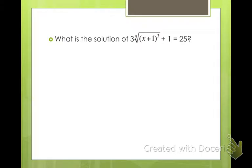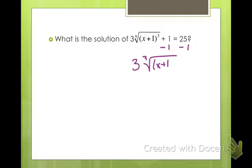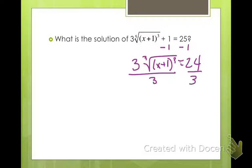What is the solution of 3 times the fifth root of x plus 1 cubed plus 1 equals 25? I know this one looks scary, but just break it down by parts. The first thing we want to do is get the radicand part by itself, so let's start by subtracting 1. That gives us 3 times the fifth root of x plus 1 cubed equals 24. Now divide by 3 to get the radicand part by itself: the fifth root of x plus 1 cubed equals 8.